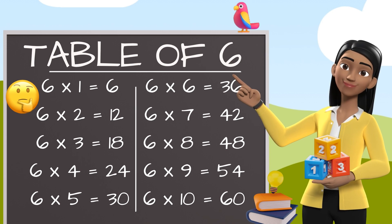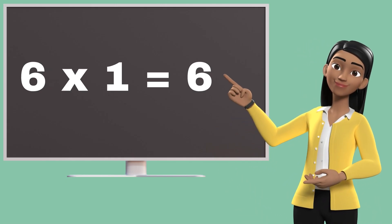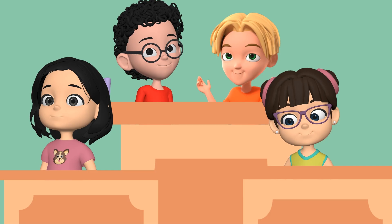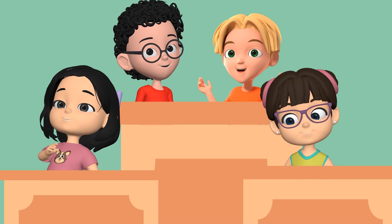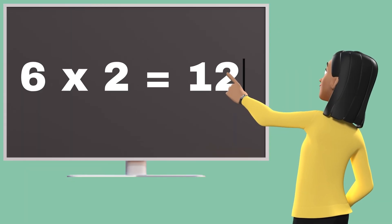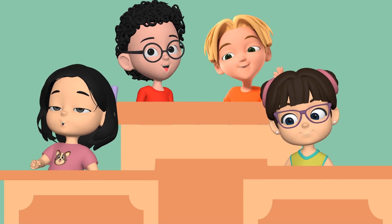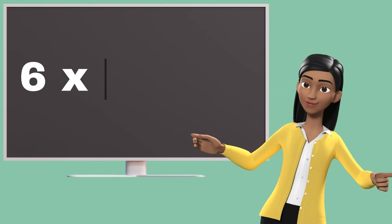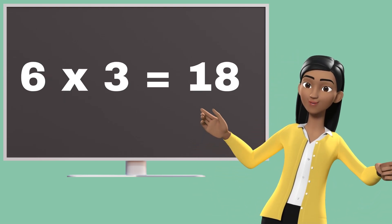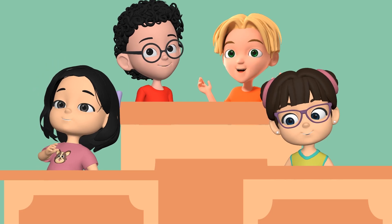Table of 6. Six ones are six. Six ones are six. Six twos are twelve. Six twos are twelve. Six threes are eighteen. Six threes are eighteen.